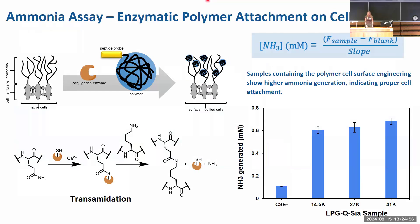One experiment was an ammonia generation assay. Ammonia is a side product produced when the conjugation enzyme attaches the polymer to the cell surface in a transamidation reaction. To assess the levels of attachment, we used an assay kit and a plate reader. A reagent in the kit reacts with ammonia to produce a fluorescent product proportional to the amount of ammonia present. Samples containing the polymer showed higher ammonia generation, indicating proper attachment.